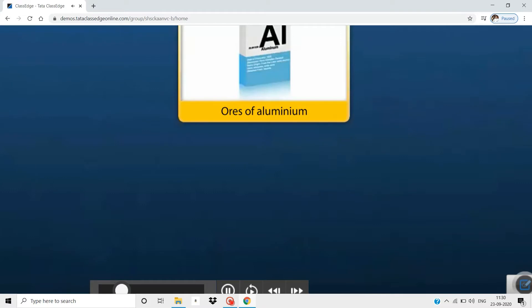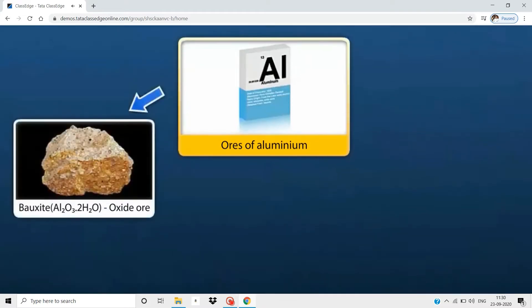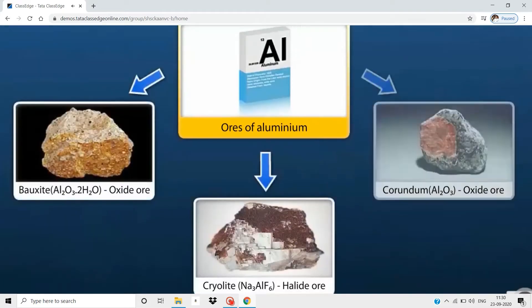Aluminium can be extracted from bauxite, cryolite, and corundum.